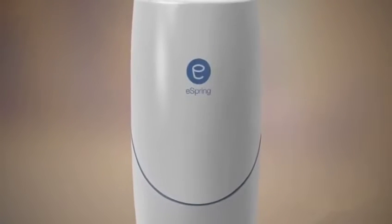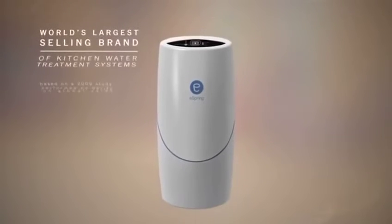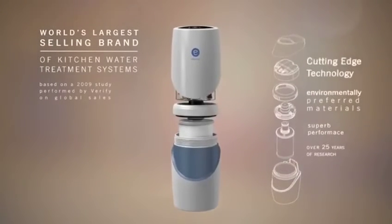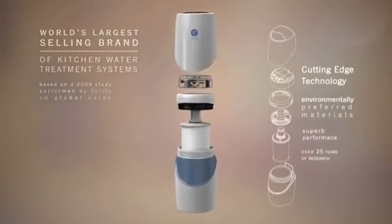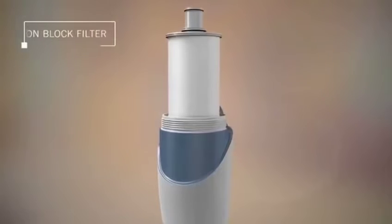You want a product like eSpring and we've designed this into an all-in-one very compact unit. Here's how it works. The eSpring system contains an all-in-one cartridge that has a UV lamp inside a press activated carbon filter.